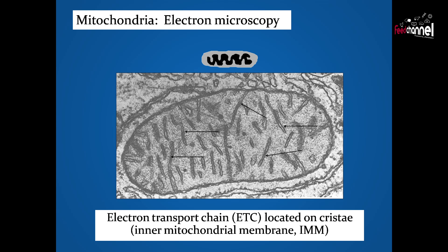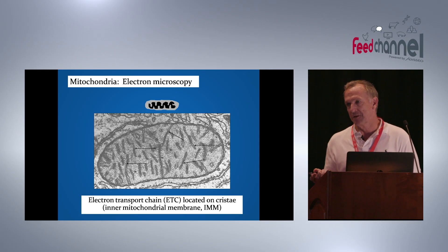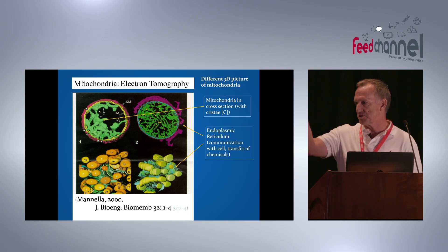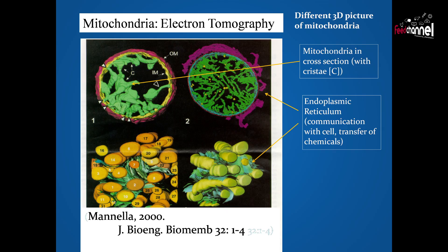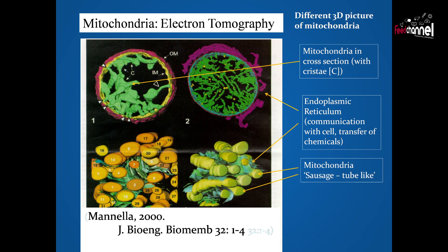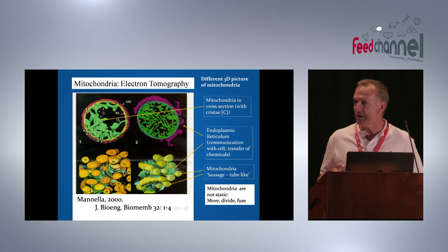This is an electron micrograph of a mitochondrion. The electron transport chain is on the inner mitochondrial membrane. But the standard micrograph gives a false sense of what mitochondria look like — scanning electron tomography gives more of a sense of the three-dimensional structure, including the cristae. The endoplasmic reticulum surrounds the mitochondria, facilitating transport in and out. The mitochondria are sausage-shaped, extend throughout the cell, and they're not static — they divide, fuse, and move around in cells.